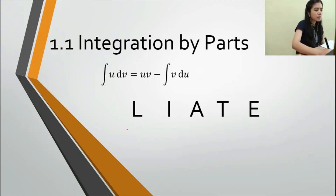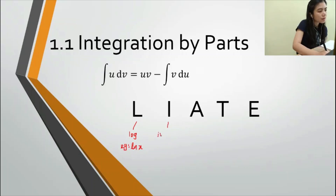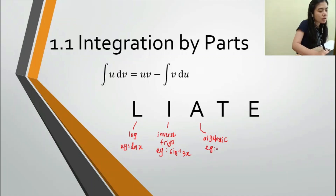In LRATE: the L stands for Logarithm, so you may have ln(x). The I stands for Inverse trigonometric functions — for instance, you may come across sin⁻¹(x). The A stands for Algebra — for instance, you have x² or just a constant.